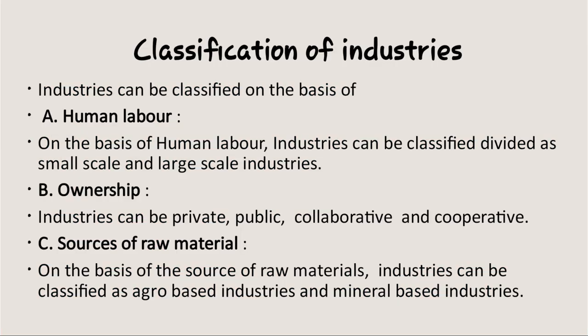Classification of industries. Industries can be classified on the basis of different things. First, we will classify on the basis of human labour; second, ownership; and third, source of raw material. Please underline: industries are classified on the basis of human labour, ownership, and source of raw material. On the basis of human labour, we are dividing into large scale industry and small scale industry. On the basis of ownership, we divide into private, public, collaborative, and cooperative. On the basis of raw material, we classify into agro-based industries and mineral-based industries. We will go into detail in the next clip.